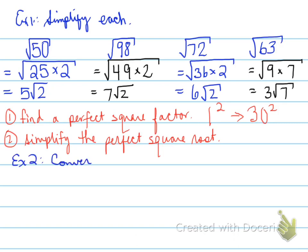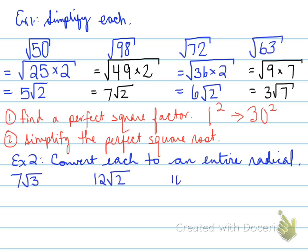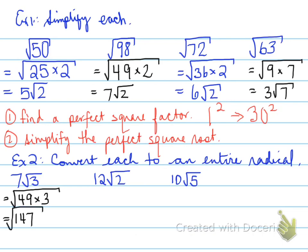Example 2: convert each to an entire radical — going from a mixed radical back to an entire radical. For 7 root 3, bring the 7 back inside by squaring it: 7 squared is 49, so you get root of 49 times 3, which gives root 147.